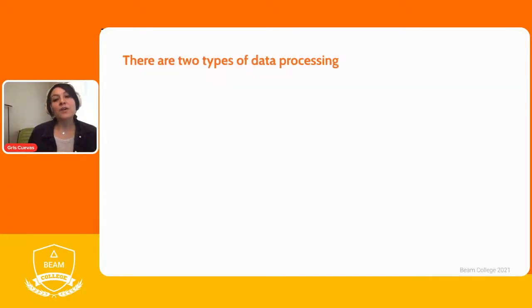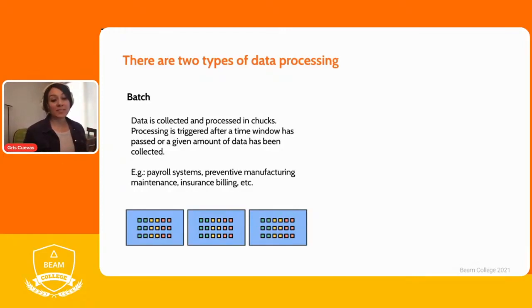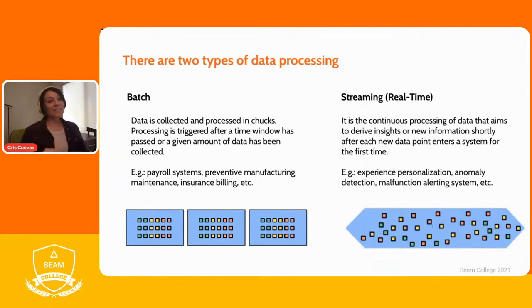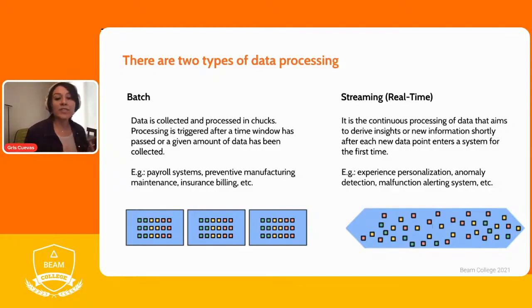There are two types of data processing. The first is batch processing, where data is collected and then processed after one of two conditions: either a time period is completed or a given amount of data is collected. Processing happens in chunks once one of those conditions is achieved. Examples of batch processing include payroll, preventing manufacturing issues, or consolidating activity to build a user bill at the end of a month or cycle.